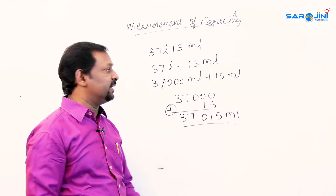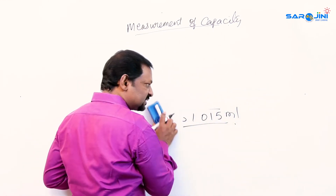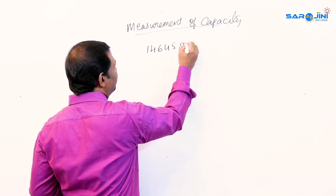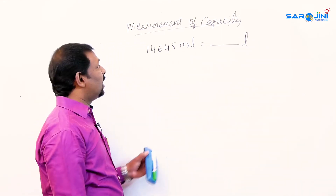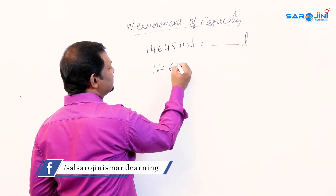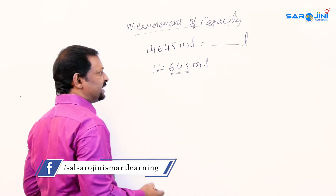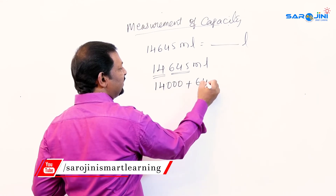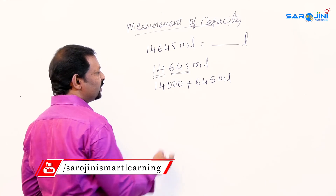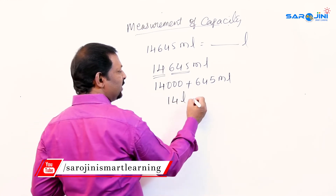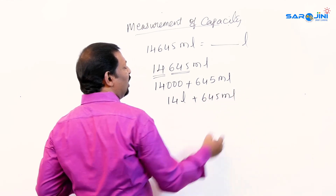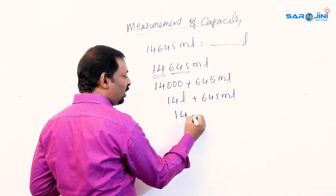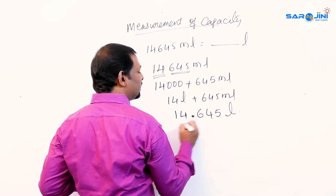Now converting milliliters to liters. Suppose 14,645 ml is given and you want to convert it to liters. Wherever the thousands place comes, you split it: 14,000 plus 645 ml. So 14,000 ml is nothing but 14 liters plus 645 ml. In other words, you can write 14.645 liters. You have to check whether it is three decimal places — before three places we put a decimal because this is the thousands place, and 1000 ml equals 1 liter.